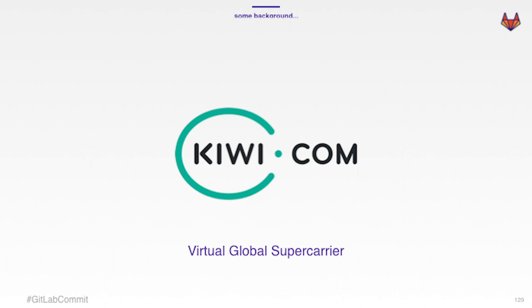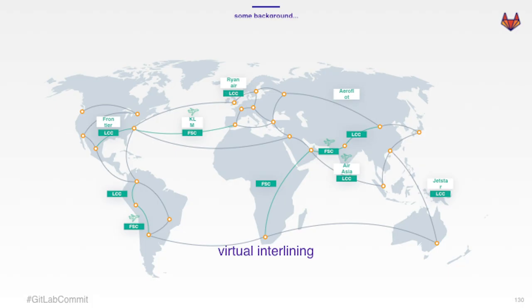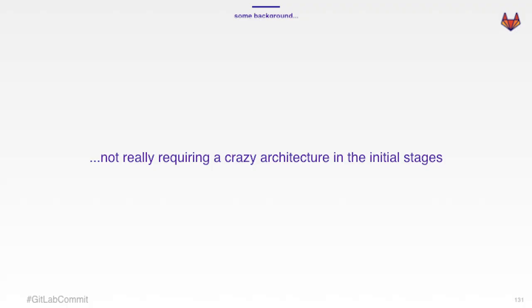For those of you who don't know, QI.com defines itself as a virtual global supercarrier — a pretty cool name that hides a simple explanation. We aim to provide door-to-door transport everywhere in the world using something called virtual underlining, which is about connecting different carriers or transport methods to get you from door to door. At the beginning, we really didn't need any big infrastructure. Like many companies when we started, QI.com ran everything inside the same server — application, in-memory cache, database, everything on a single server.